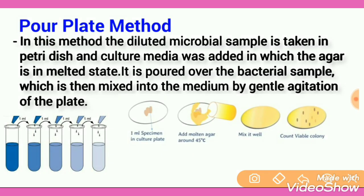Pour Plate Method. In this method, the diluted microbial sample is taken in a petri dish and culture media is added in which the agar is in a melted state. It is poured over the bacterial sample, which is then mixed into the medium by gentle agitation of the plate.